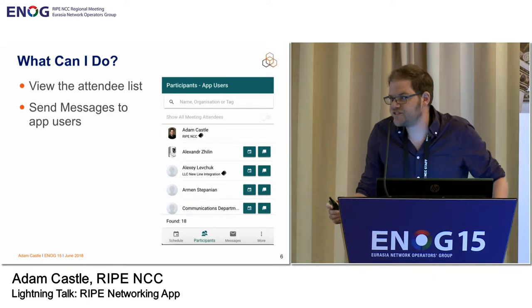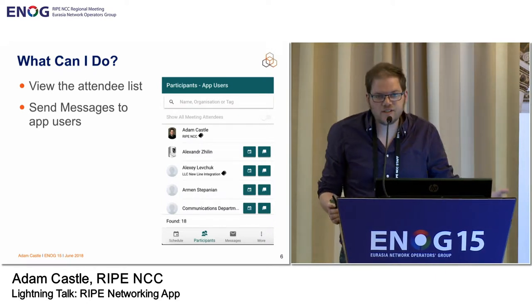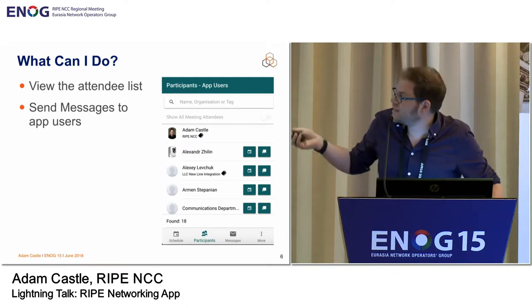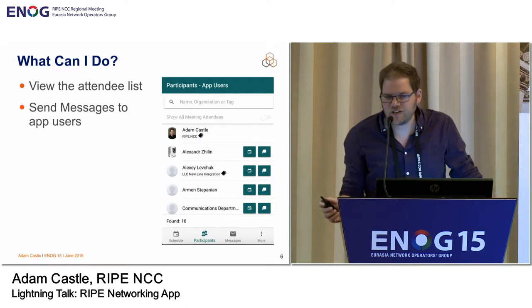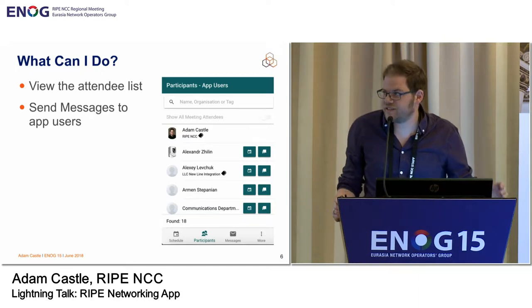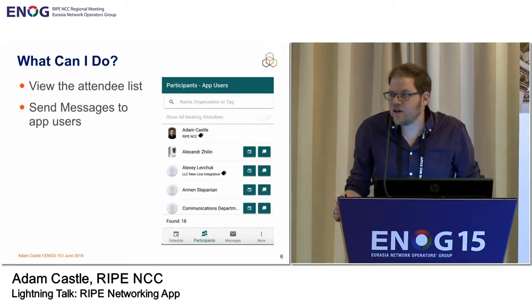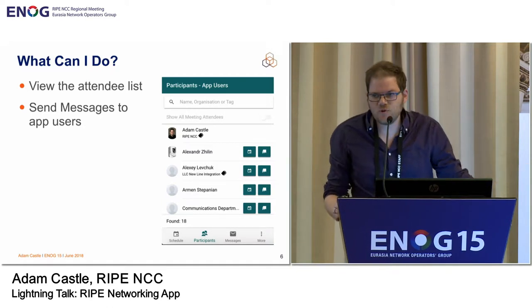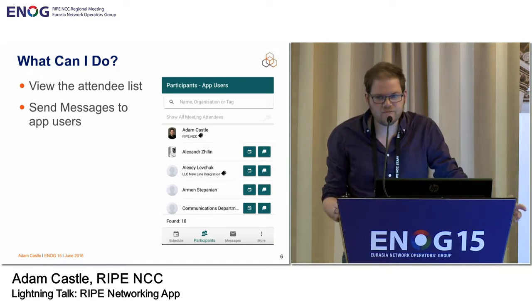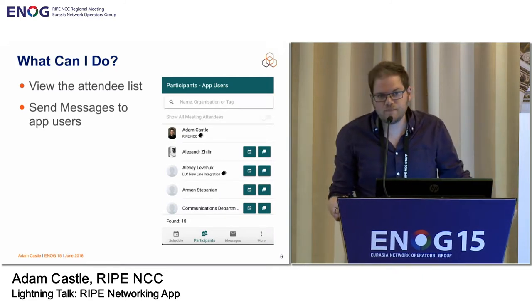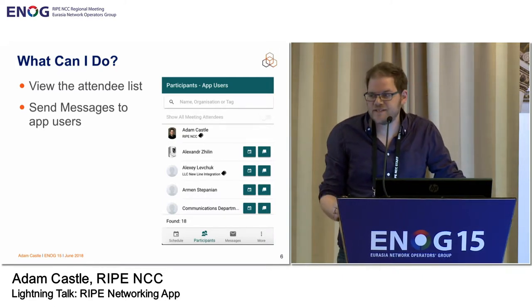On the second screen, the participant screen, you can see all users of the app. The toggle in the top right-hand corner can be used to see the actual people who have checked in on site, including non-app users. On this screen, you can search for a user by their name, tag, or company name. And from this screen, you can book meetings and send messages to each attendee.